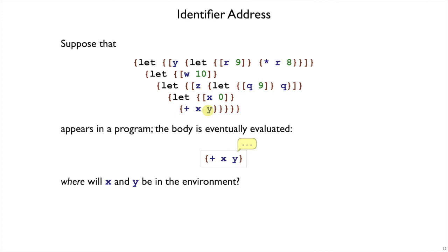We should also only count the lets that are enclosing this y, and not any other lets in the program. For example, there's a let q, b9, and q right here that is near the y, but actually has no effect on where the y is.